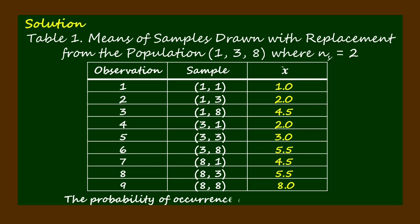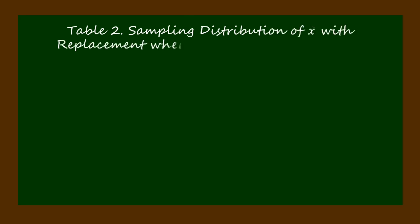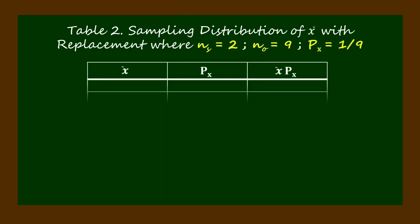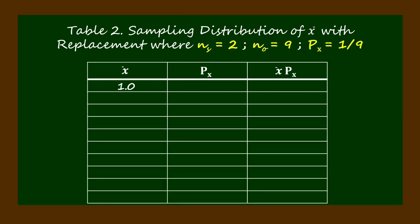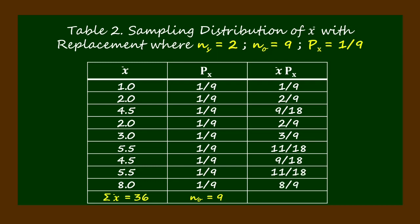The probability of occurrence of each mean is 1 over 9. Now let's construct the sampling distribution of means with replacement, where the sample size equals 2, number of observations equals 9, and the probability of each sample mean p sub x equals 1 over 9. On the first column we list down the 9 sample means obtained from Table 1, and on the second column are the corresponding probabilities of each sample mean. On the third column are the products of each sample mean and their corresponding probabilities. From the table, we get the summation of the sample means equal to 36, the number of observations equal to 9, and the sum of the products of bar x and p sub x equals 4.00.